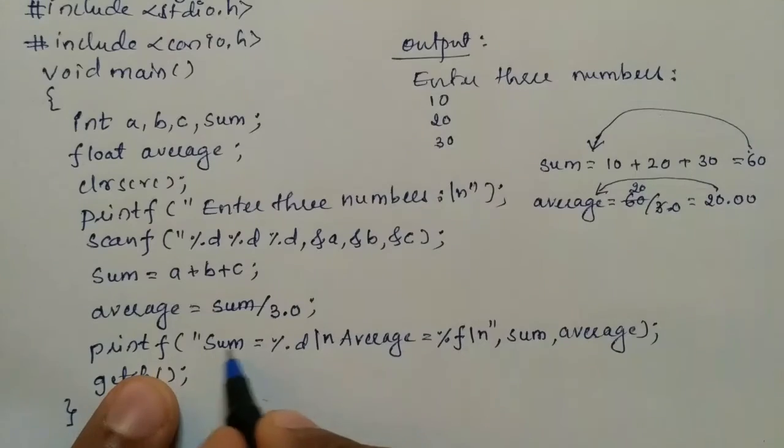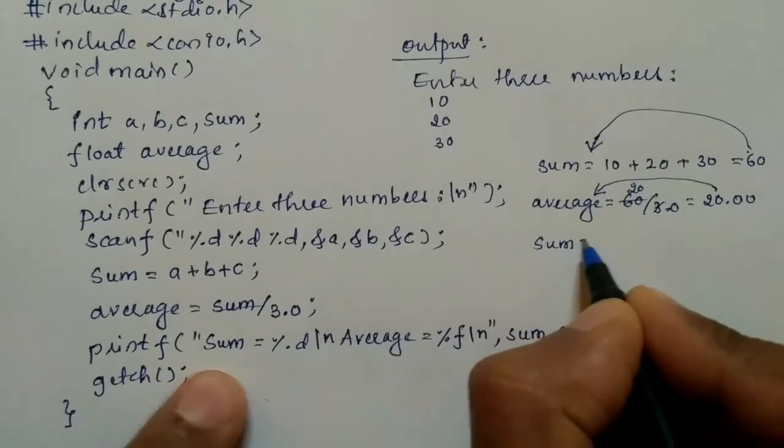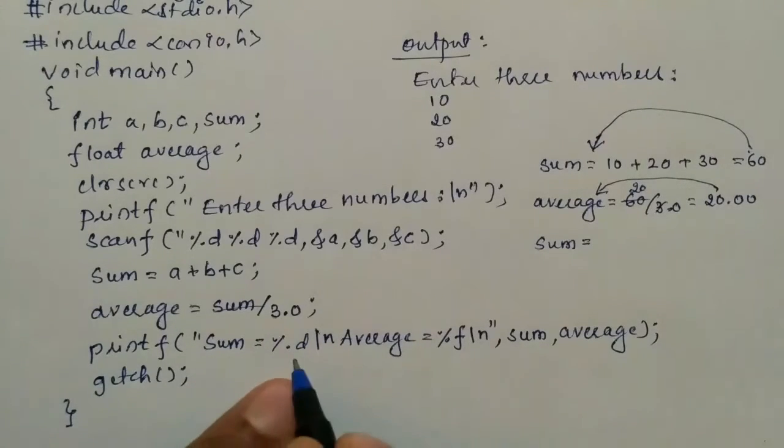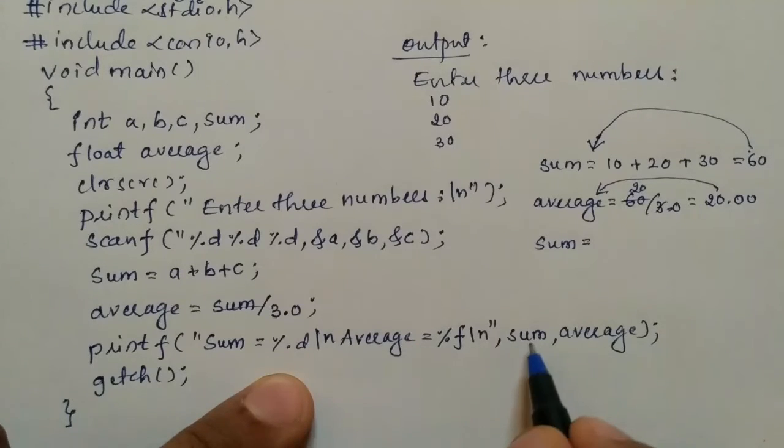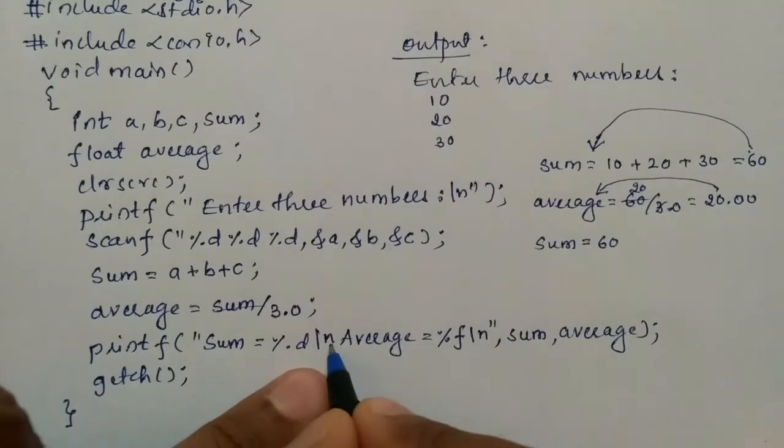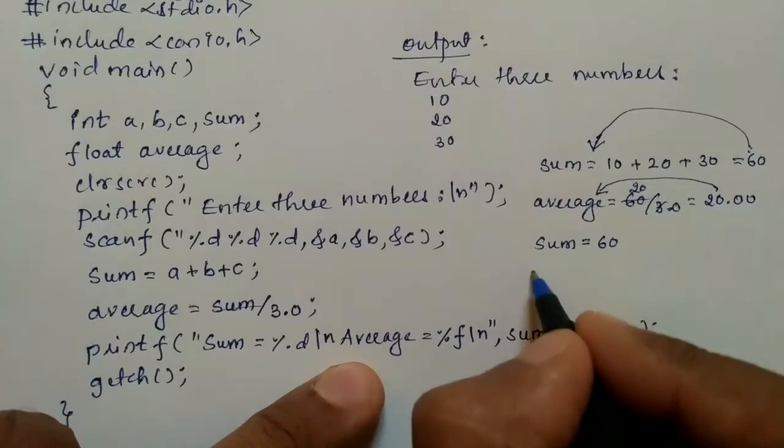And here in this particular statement, sum = it is going to display sum is equal to. Whatever you write in double quotation marks will be printed as it is. %d, that format specifier, refers to the value stored in sum. Here it is 60, so sum is 60. Here we have used \n, the cursor will come down to the next line.